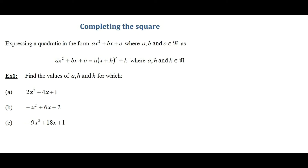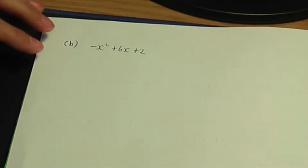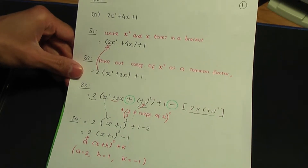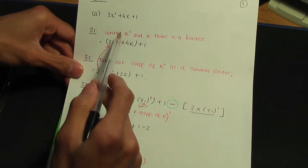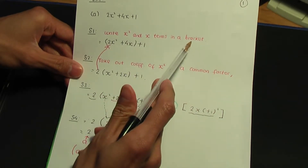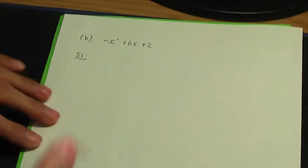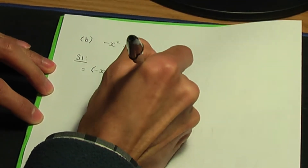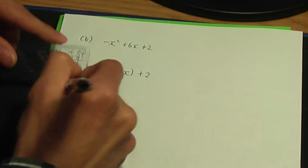For part b, we need to complete the square of minus x squared plus 6x plus 2. Back to paper and pen: minus x squared plus 6x plus 2. In step number 1, write the x squared and x terms in a bracket. So I write the minus x squared term and the 6x term in a bracket, leaving the plus 2 outside. Step 1 is complete.